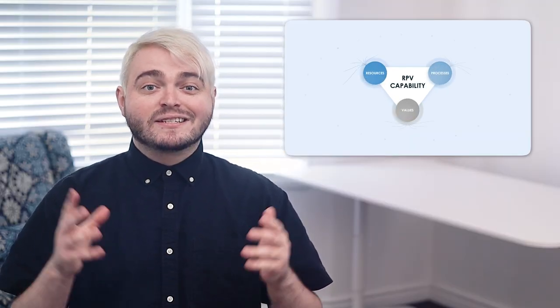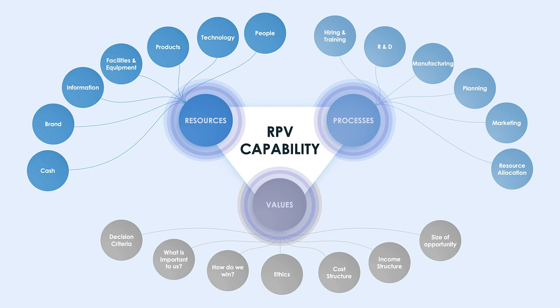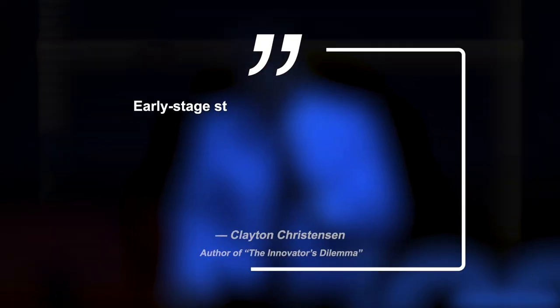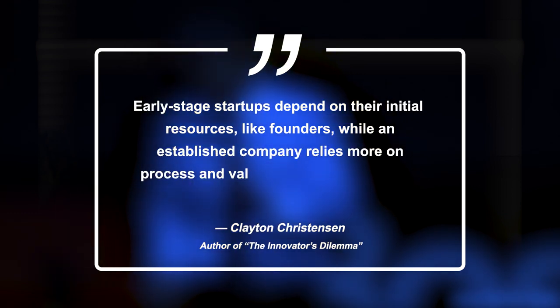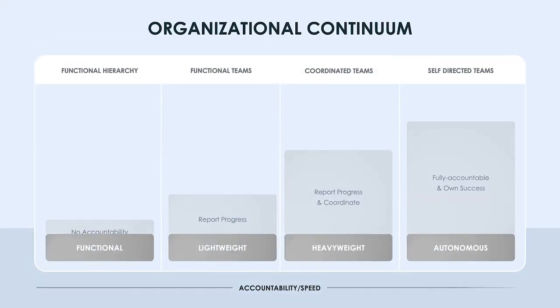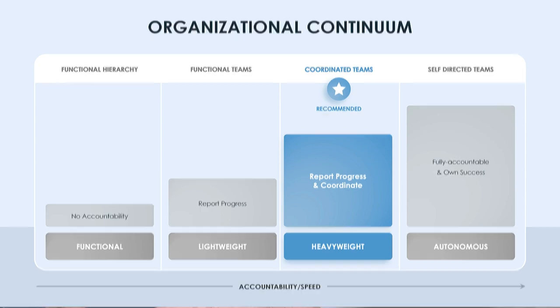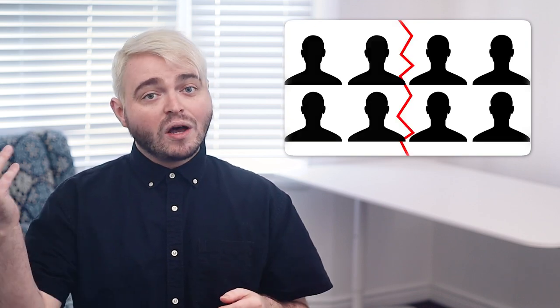A big part of the innovator's dilemma is the decision on how to structure a company to address innovation, which should be based on the organization's unique resources, processes, and values — or RPV. These three elements determine how and what decisions the company makes. As Christensen says, early-stage startups depend on their initial resources like founders, while an established company relies more on process and values, hiring and replacing thousands of people every year. The organizational continuum chart helps plot team hierarchy to manage innovation. Since innovation is not a one-size-fits-all solution, every company's RPV structure is different. As a larger company, commingling a disruptive team into a sustaining team typically won't work because the two competing goals will clash. In that case, it's much better to create a spinoff team with separate goals to provide the autonomy that both need to survive. For a startup, a traditional hierarchy might work best to streamline resources and workflows.